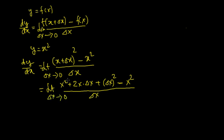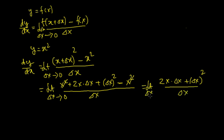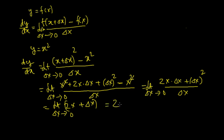In the numerator, the x² terms cancel, and we are left with 2x·Δx + Δx², divided by Δx. This simplifies to 2x + Δx. Now if Δx tends to zero, the Δx term vanishes, and we are left with 2x. So d(x²)/dx = 2x.